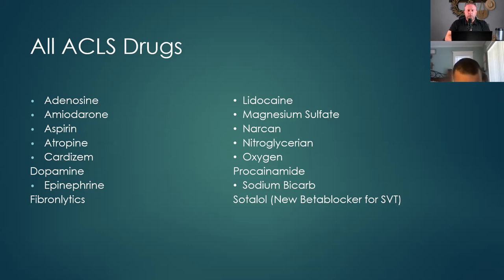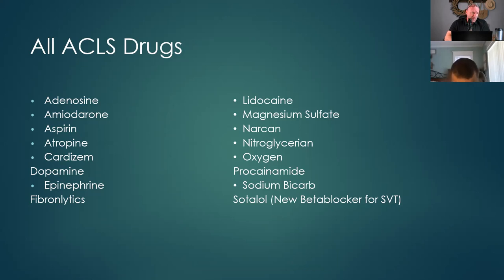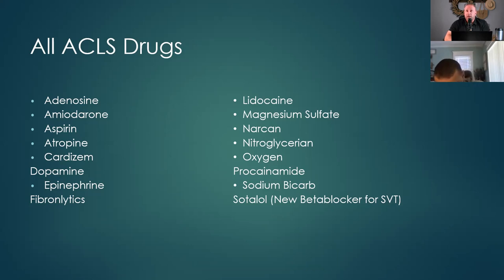Lidocaine — that's a drug we brought back. One to one-and-a-half milligrams per kilogram, just your first and second dose. Mag sulfate — we give this for persistent or resistant V-fib. We've gone through the entire algorithm, given five shocks, all the epi, all the lidocaine, all the amiodarone, and he just won't convert. Now we hang a mag sulfate drip: 2 grams in 100 CCs of normal saline as an infusion.